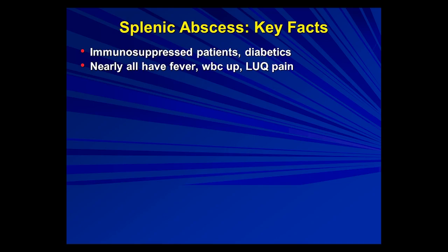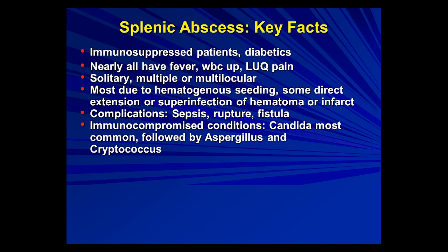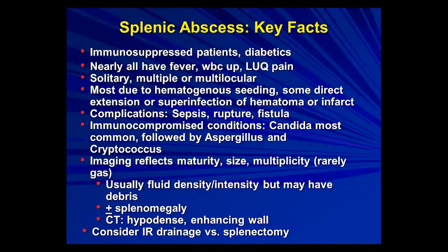The appearance of splenic abscesses really depends on the scenario. Most patients are immunosuppressed — sometimes diabetics — and they usually have fever, elevated white count, and left upper quadrant pain. The abscesses can be solitary, multiple, or multilocular, and most are due to hematogenous seeding, less commonly due to direct extension or superinfection of an organizing hematoma or healing infarct. Complications include sepsis, rupture, and fistulas. Look for underlying immunocompromise; the imaging will reflect the size, number, and maturity of the abscesses.